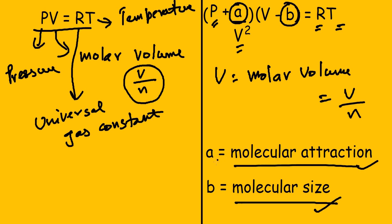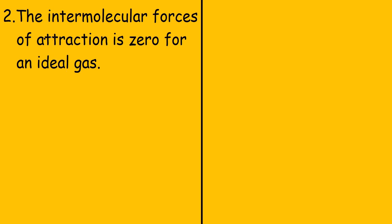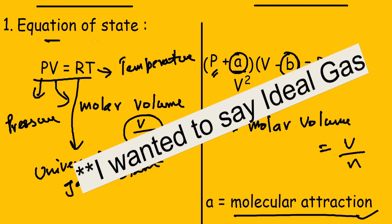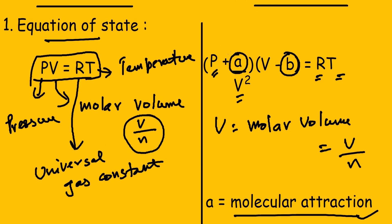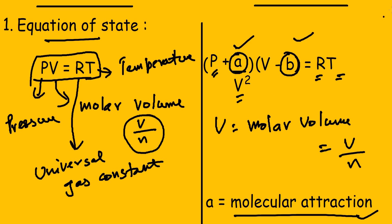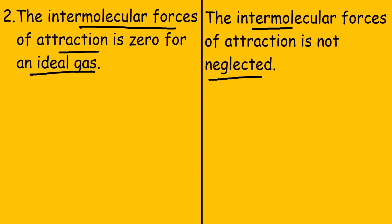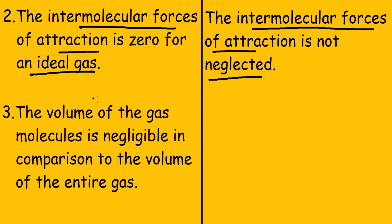The second point: for an ideal gas, the intermolecular forces of attraction are assumed to be zero. For a real gas, the intermolecular forces of attraction are not neglected. This is clear from the equation of state — in the Van der Waals equation the constant A accounts solely for molecular attraction, whereas in the ideal gas equation PV equals RT, no such term exists.